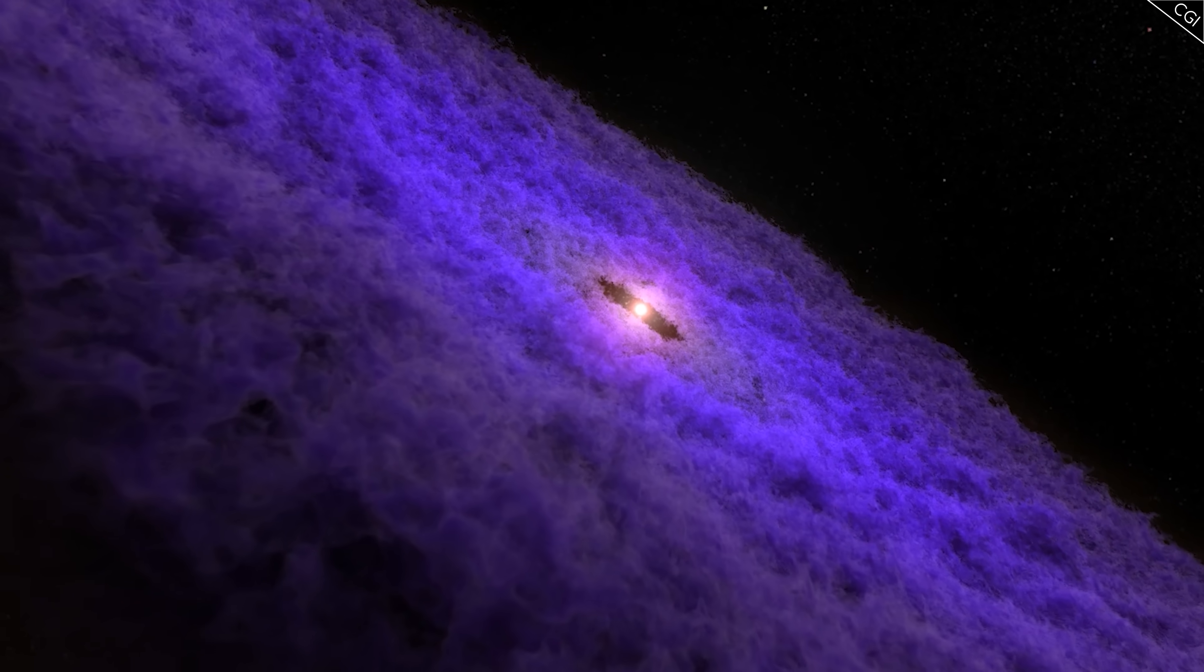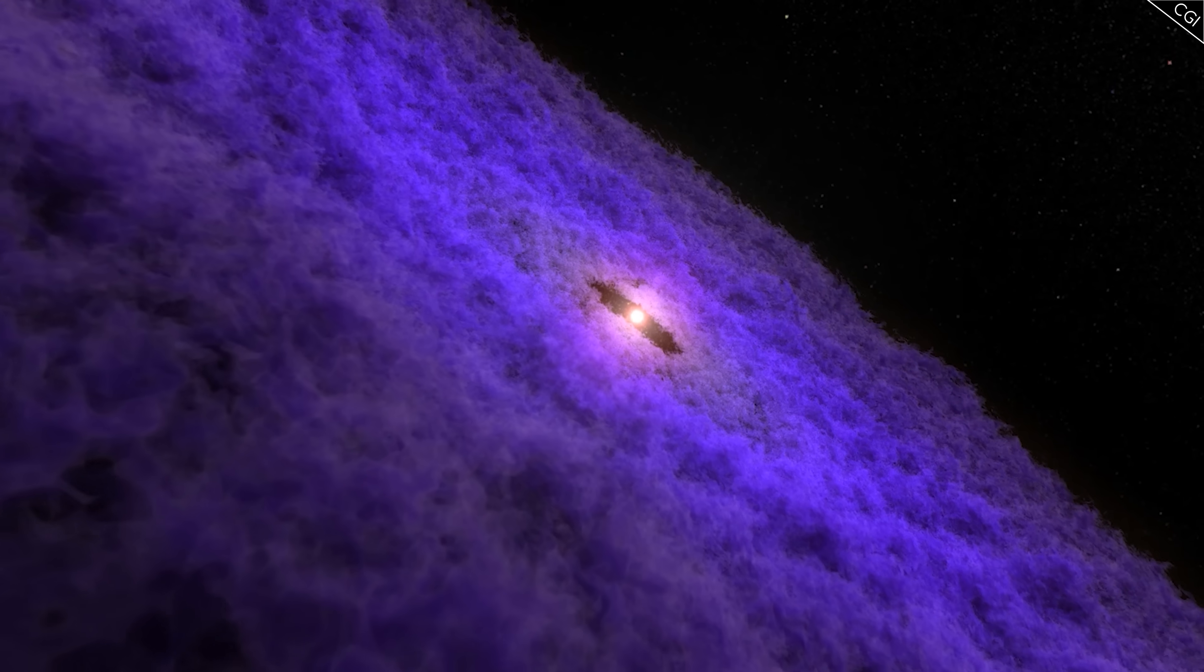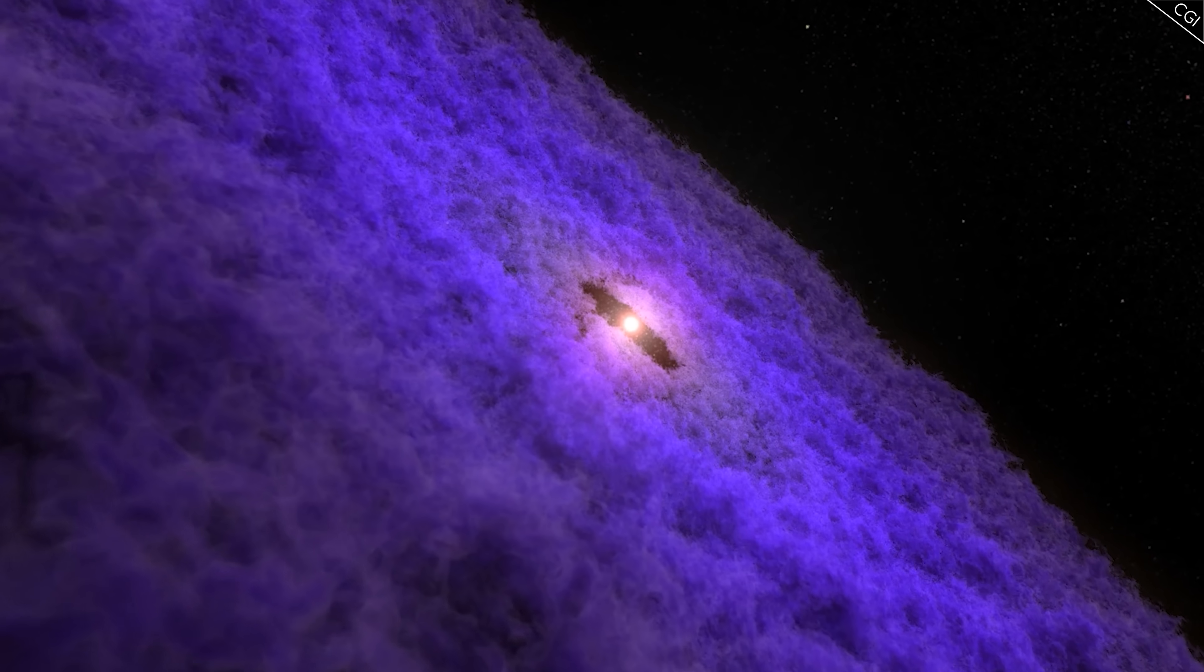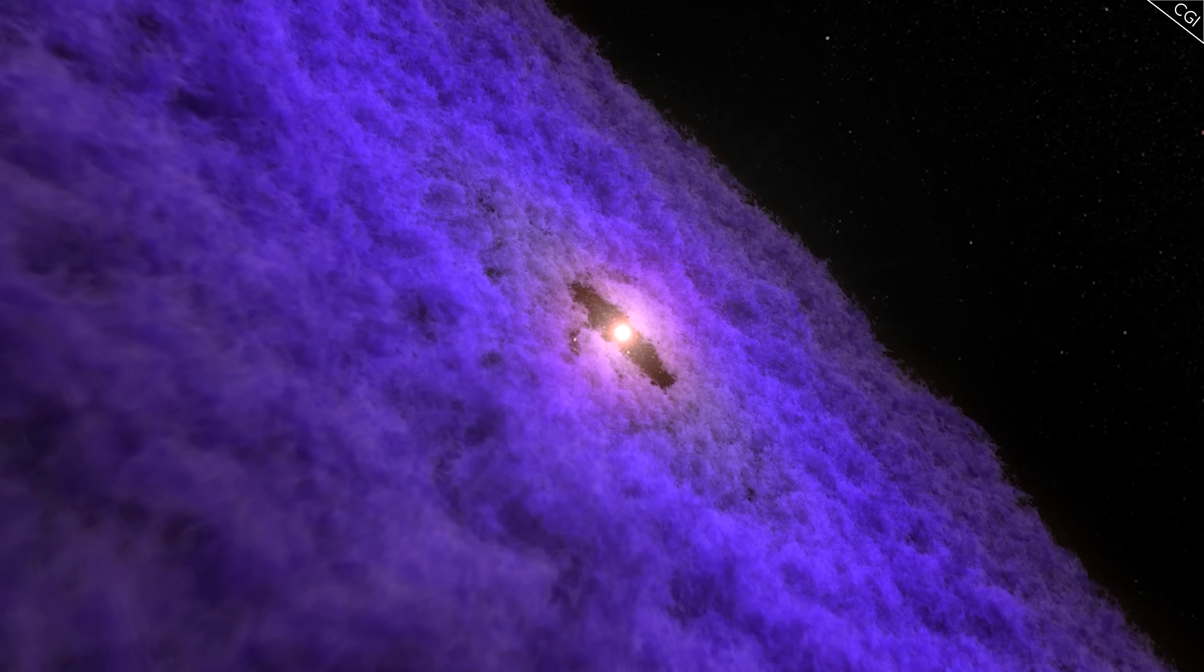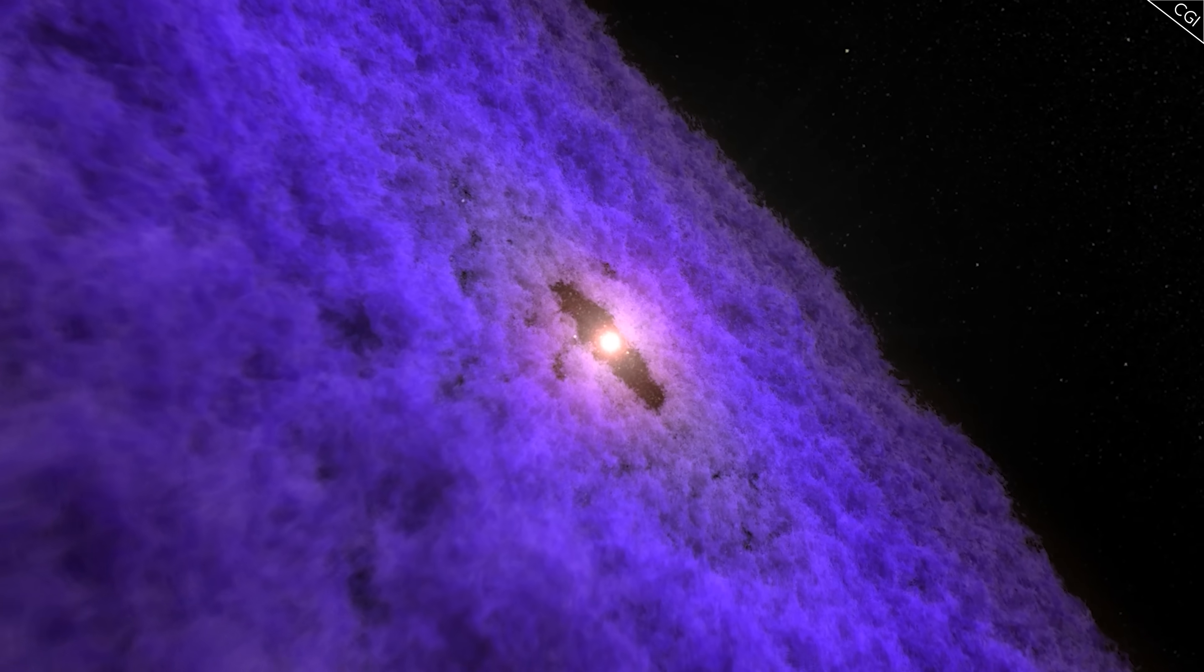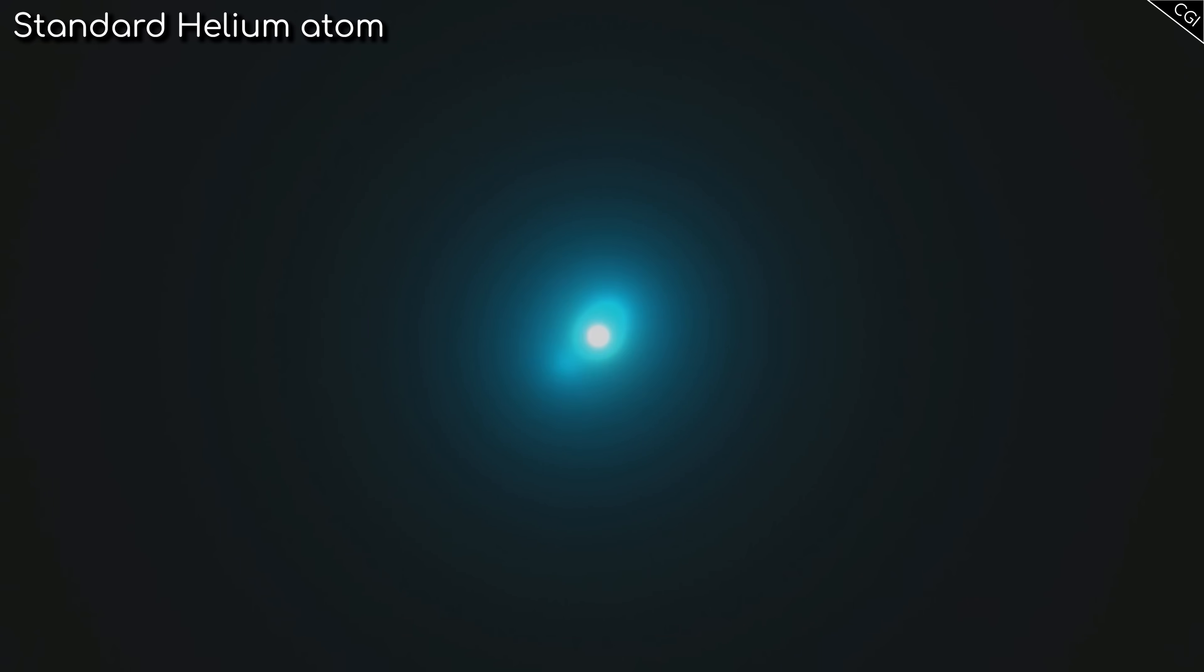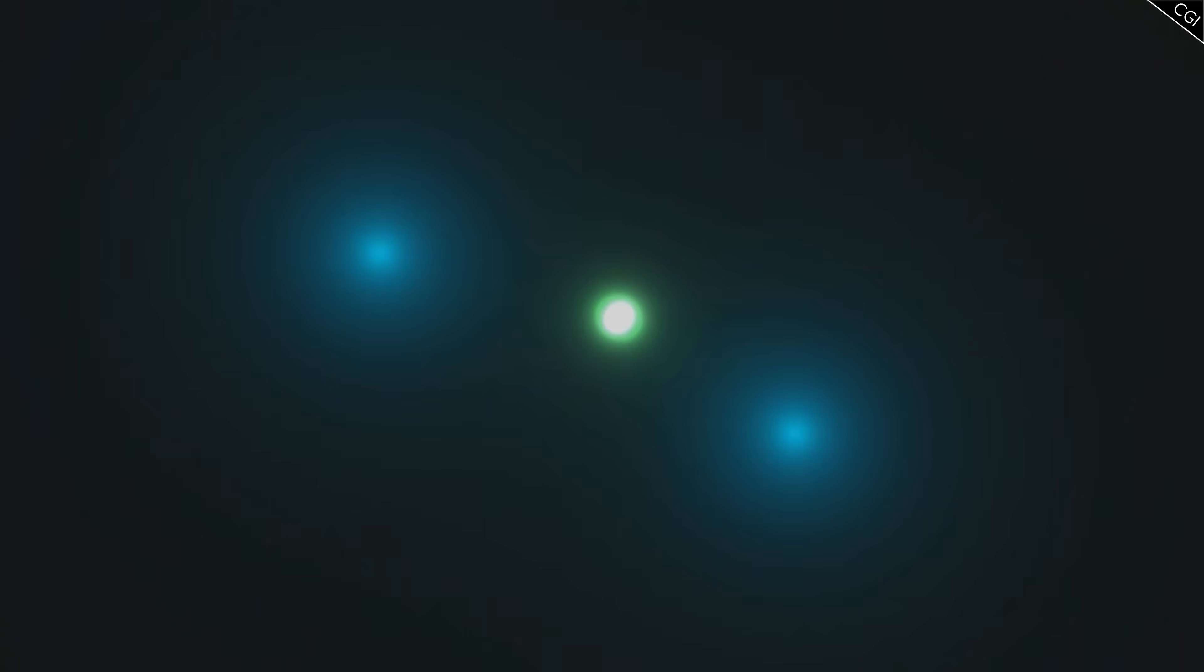Pulsars are neutron stars, the leftover cores of dead supergiant stars which, barring black holes, are the densest objects in the universe. Planets like our own are made up of atoms, which consist of over 99.999% empty space due to the vast separation between the electrons and the incredibly dense nucleus they are whizzing around.